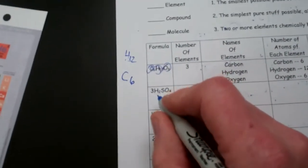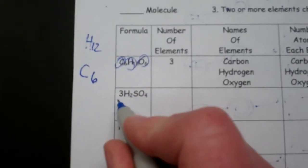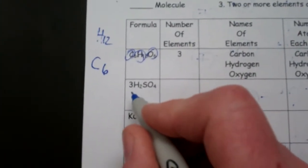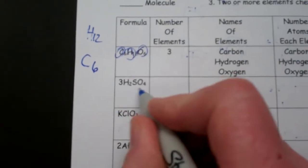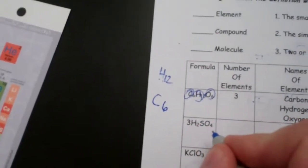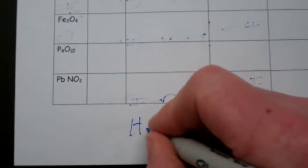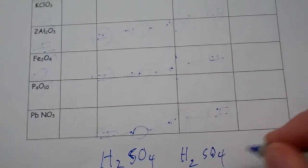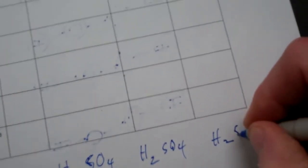So let's take a look at this one. Now this one's a little different because this has what we call a coefficient. Now a coefficient means there's three of these molecules. So 3H2SO4 means you've got H2SO4, H2SO4, and H2SO4.